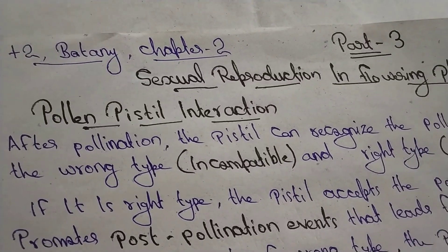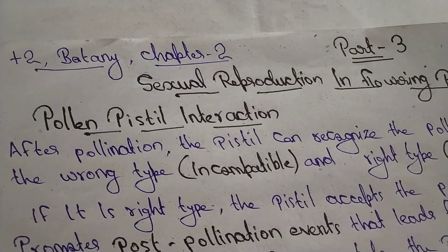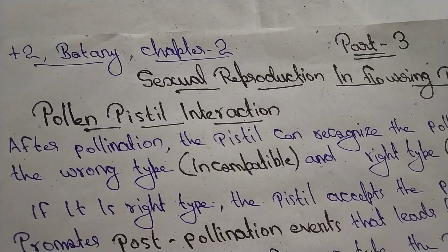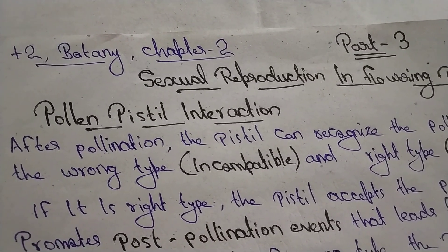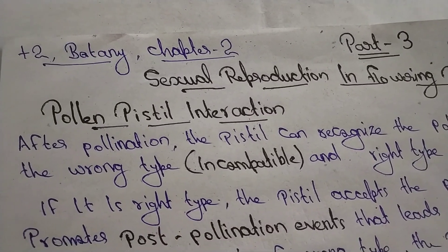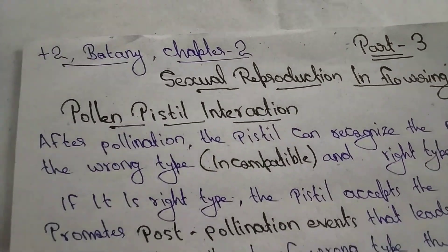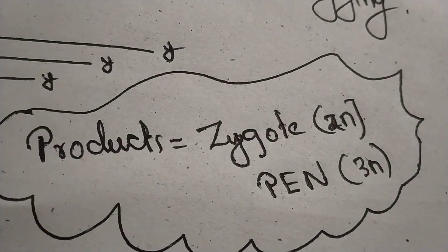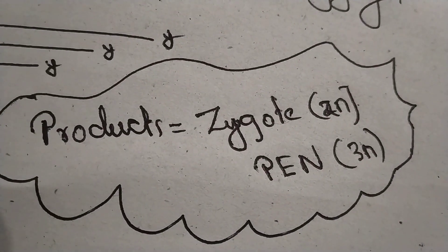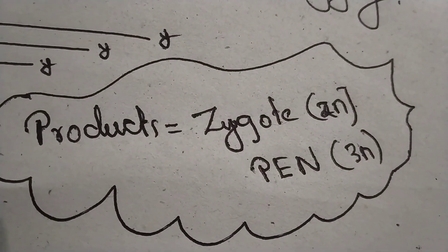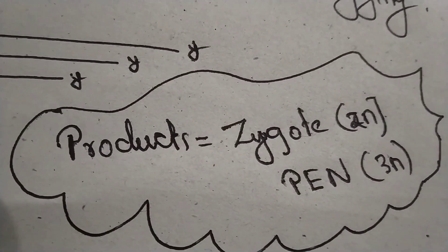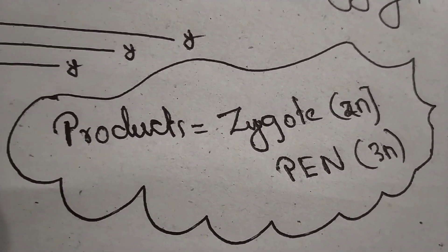Double fertilization. What is the problem? Double fertilization involves a 2n zygote and a 3n endosperm. It is protected. Double fertilization.